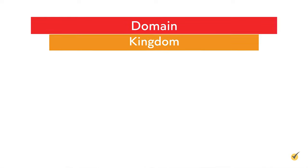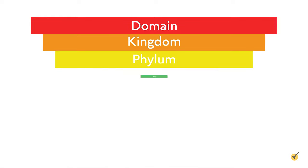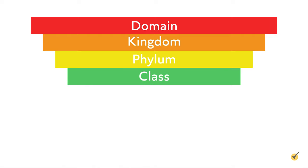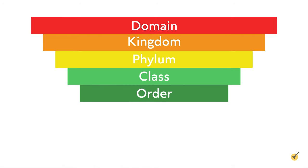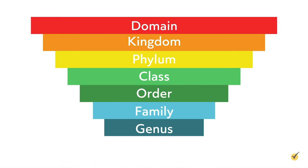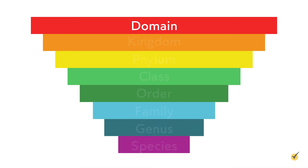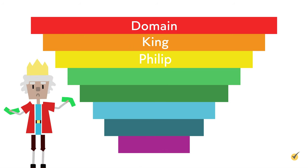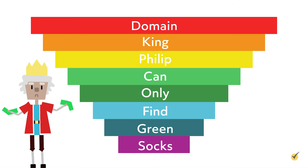Following the domain level, the classification system reads from least specific to most specific in the following order: kingdom, phylum, class, order, family, genus, and species. A mnemonic device often used to remember this order is 'King Philip can only find green socks.'